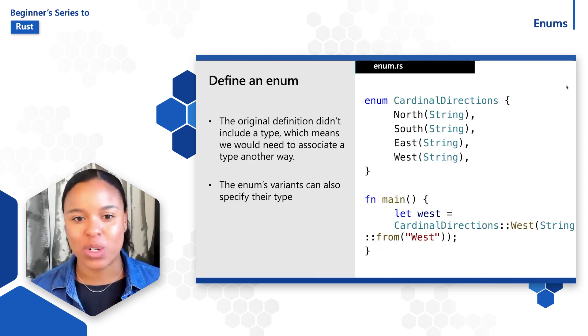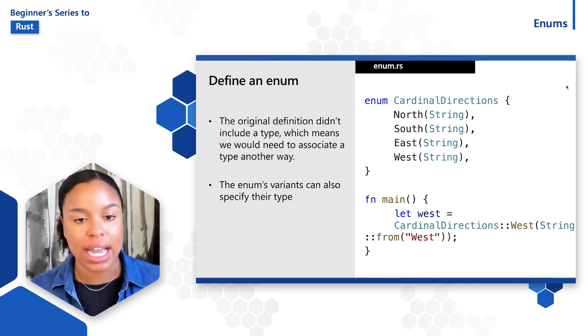Notice that in the original definition, the variants didn't include a type. That means that to associate a type, we would need to use something like a struct, for example, or we can also define the enum differently to specify a type for each variant.